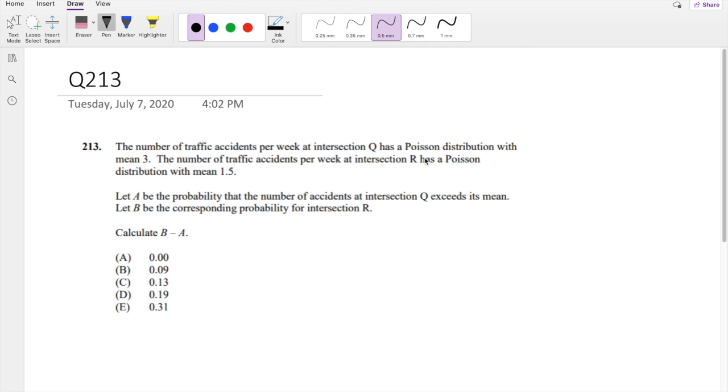This follows the Poisson distribution. The Poisson distribution formula is p(x equals some little x) equals e to the negative lambda, lambda to the x over x factorial, where lambda is our mean.